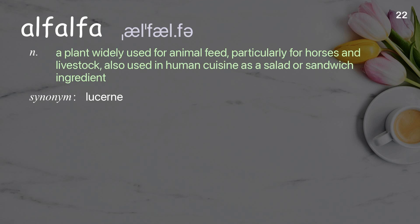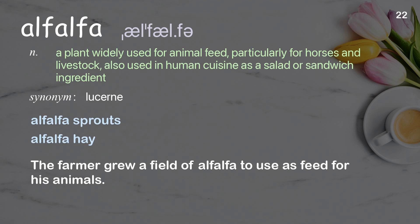Alfalfa: A plant widely used for animal feed, particularly for horses and livestock, also used in human cuisine as a salad or sandwich ingredient. The farmer grew a field of alfalfa to use as feed for his animals.